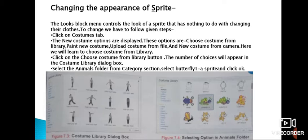Note that the Scripts tab and the Costume tab share the same space. A user moves back and forth by clicking on each tab at the top. So, the Change Color effect by 25 block changes the color and other graphical effects applied to the Sprite by the specified number. So, the class, the New Costume options - how many are there? Four. And what are they? Choose Costume from Library, Paint New Costume, Upload Costume from File and New Costume from Camera. See Figure 7.3, Costume Library Dialog Box and Figure 7.4, Selecting Options in Animals folder.